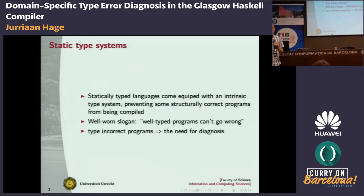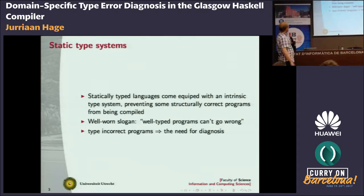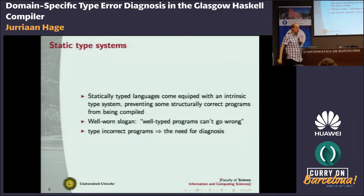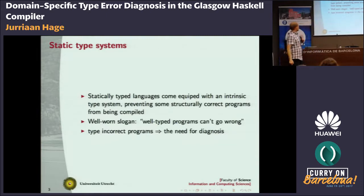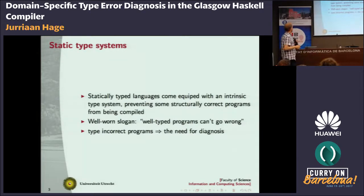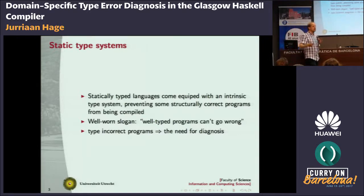I'm in a situation where I have a statically typed language — a strongly statically typed language like Haskell — equipped with an intrinsic type system. It's an intrinsic type system that tries to prevent structurally correct but semantically nonsense programs from being compiled. This is the well-worn slogan that well-typed programs can't go wrong. It might still not implement what you want, but you will not be adding booleans to strings. If you have a type-incorrect program, the compiler should inform you it's type-incorrect.